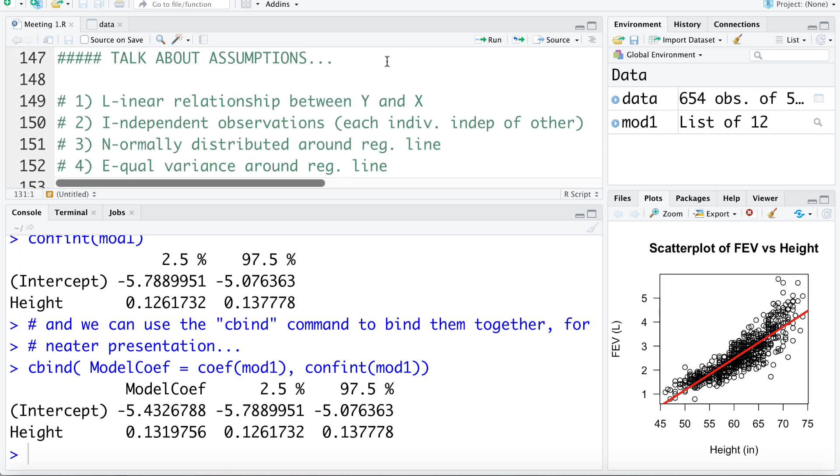We've talked a lot about the assumptions for simple linear regression previously as well as in a whole separate video. For now, I just want to quickly recap what the assumptions are, and then we'll look at ways of trying to address violations in the assumptions. The first assumption is that there's a linear relationship between Y and X, that a line can accurately represent the relationship between the two variables.